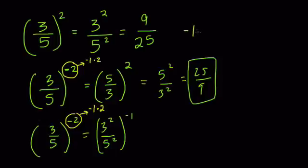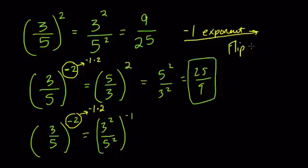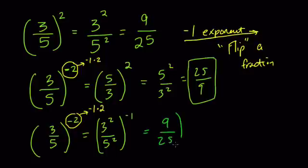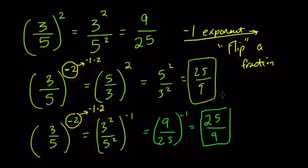So a side note is that the negative 1 exponent will flip or take the reciprocal of a fraction. The fraction is numerator and denominator. And now we can finish this. So we have 3 squared over 5 squared is 9 over 25. And then, now we apply the negative 1 exponent and that will flip it over to get 25 over 9, which is what we got before.